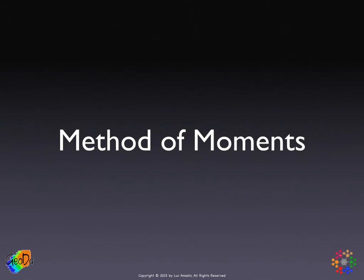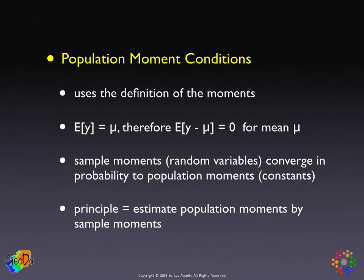The method of moments is actually a very general estimation principle, and it's older than maximum likelihood, for example. It goes to the core of the definition of the moment. A moment is an expected value of a power of the random variable that we consider, and specifically the expected value of the random variable itself is the mean by definition. Therefore, in expectation, the difference between the random variable and its mean is zero. That's also by definition.